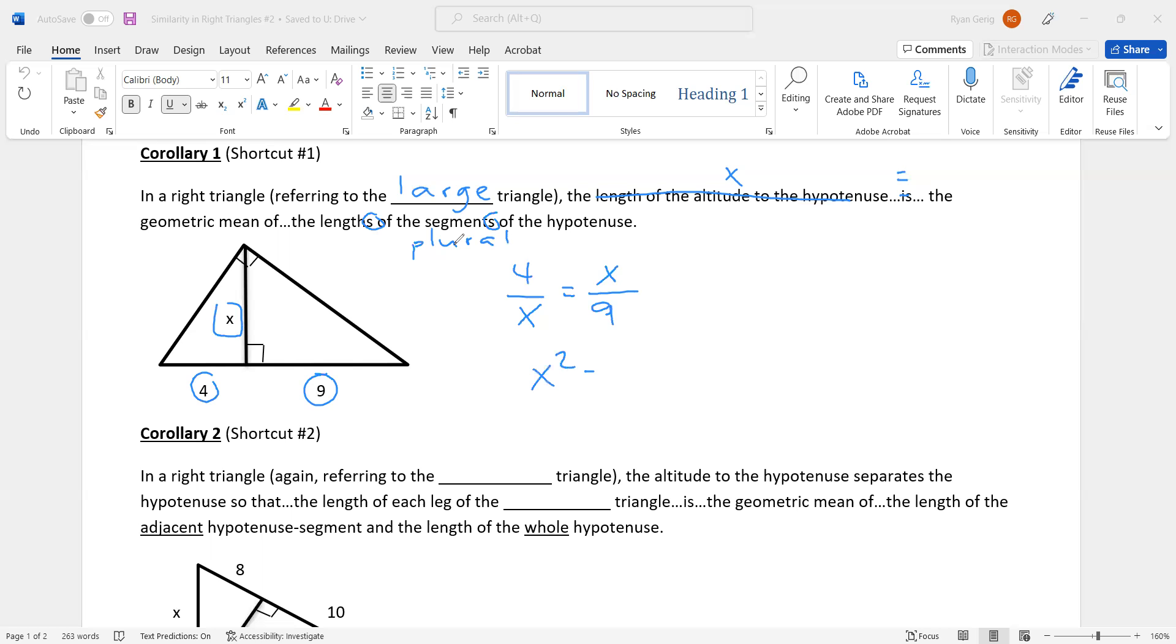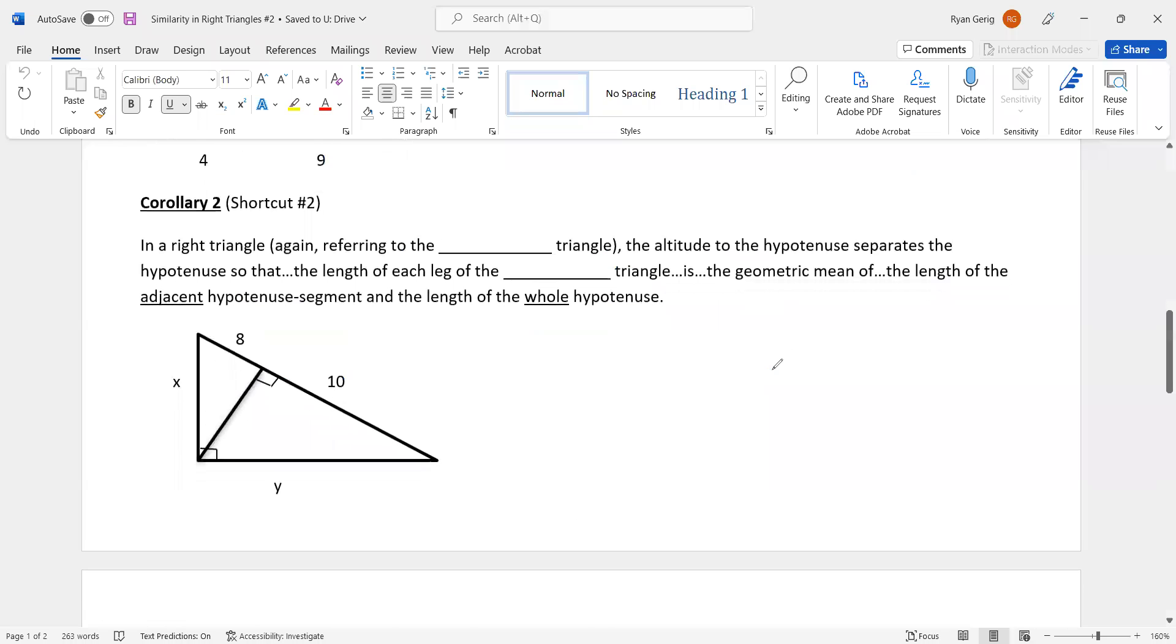See why we did geometric mean. X equals 6 here. And you could see, if you took 6 back in, 4 over 6 is two thirds, 6 over 9 is two thirds. And if you look at it further, 4 is the short leg, X is the long leg of the small triangle. X is the short leg, 9 is the long leg of the medium triangle. They match up. That's the first one. That's usually the easier one. The second one is usually a little bit harder.